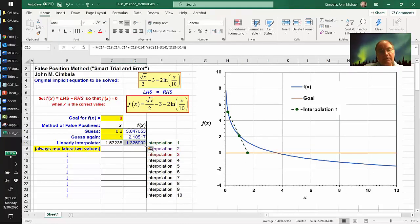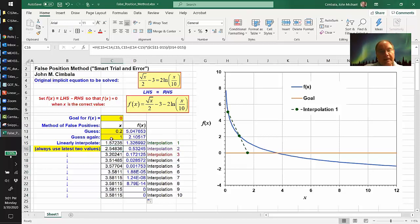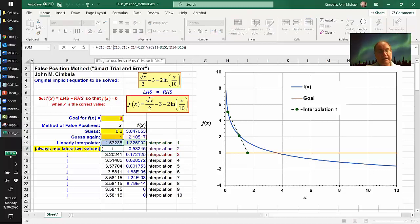Well, in Excel, if you grab this little square here, you can fill down and keep doing this. What's happening is every time I interpolate, I use the last two values. So if I go up here, I'm using this one and this one to get my new X. And then this is just the f at that X.